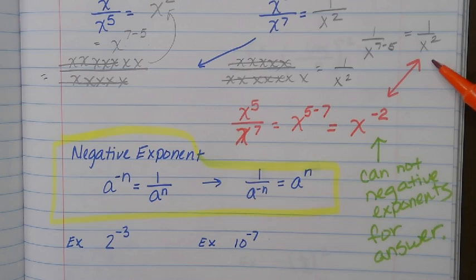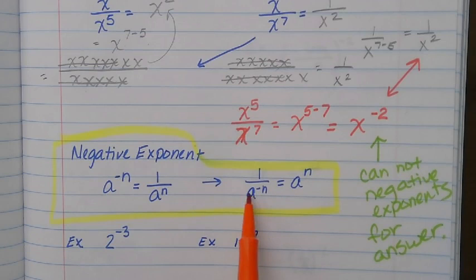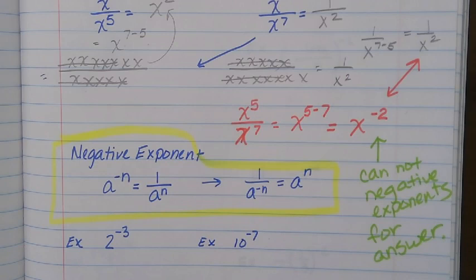Changing that negative two to a positive means doing the reciprocal of your base. The other case is when you see a negative exponent in the denominator — basically that means you change it to positive and do the reciprocal of that base, putting it in the numerator.